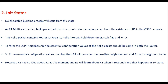The next state is the Init state. This is the state where the neighborship building process starts. R1 has multicasted the Hello packet in the Down state, and now all routers have received the Hello packet from R1. The Hello packet contains: Router ID, Area ID, Hello interval, Hold-down timer, Stub flag, and MTU values. These are the essential configuration values. In order to form a neighborship, both routers should have the same Hello interval, hold-down timer, stub flag, and MTU value.